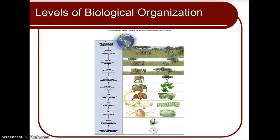When many organs come together with a common goal or function, you're at the organ system level. For example, the nervous system includes the brain, spinal cord, and nerves — the central and peripheral nervous systems. When all the body systems come together, you have the organism as a whole, such as the African elephant. An organism can be any living thing: an elephant, a bacterium, a protist, or the human organism.